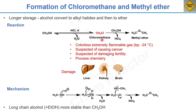Chloromethane is suspected of causing cancer and damaging fertility. This is also very important in process chemistry — on a small scale it may not matter as much, but in process chemistry we work on a larger scale, so using longer-stored HCl in methanol solution can introduce extra impurities. Furthermore, longer exposure to chloromethane can damage the liver, kidneys, and the central nervous system.